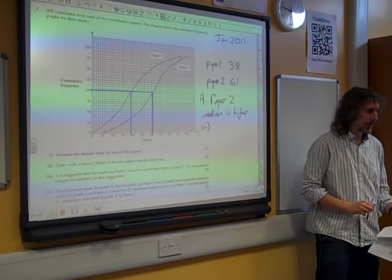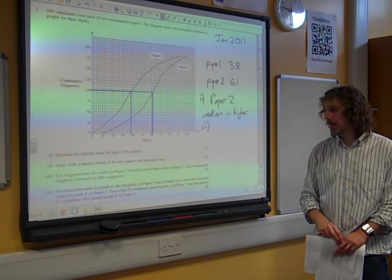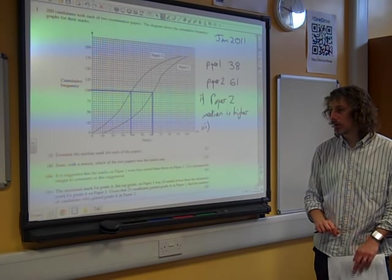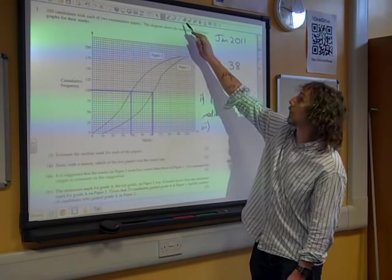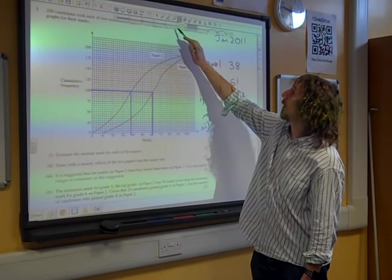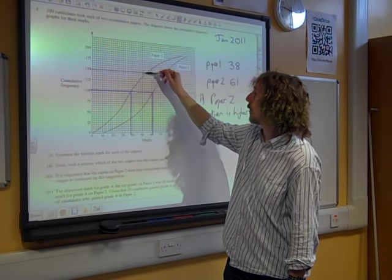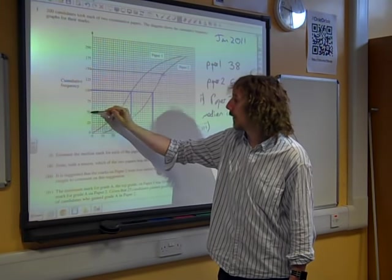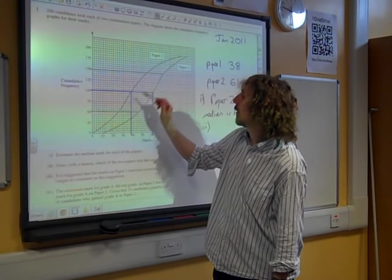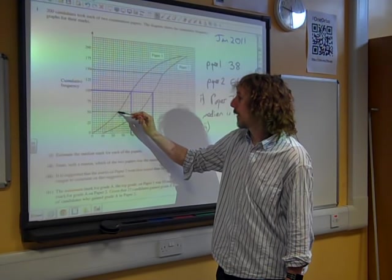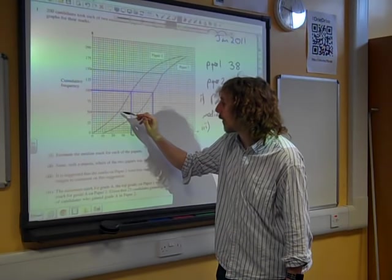Part 3, I've maybe not left them in a space to do part 3, yeah. It is suggested that the marks on paper 2 were less varied than those on paper 1. Use interquartile ranges to comment on this suggestion. So, we're now being asked to calculate the interquartile range for all of this data. So, let's work that out. That's 150 that we're drawing our line across now. And 50. And seeing where these come down. Doing it on a whiteboard is perhaps not the best place to be doing this, because it's not that easy to see what's going on.